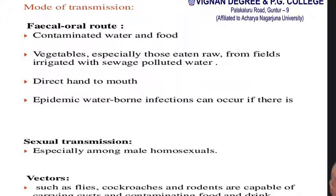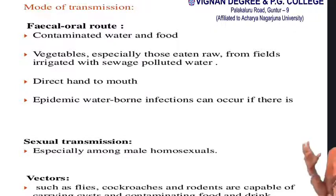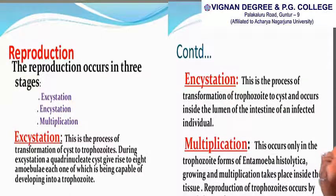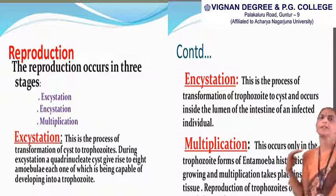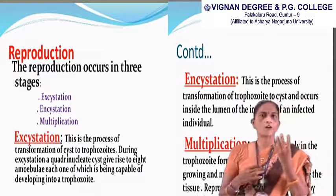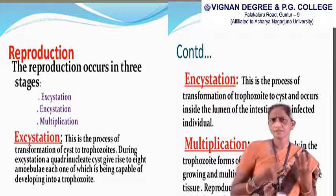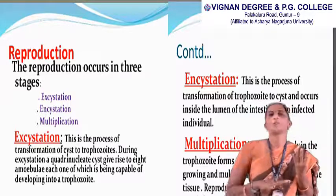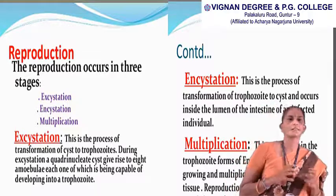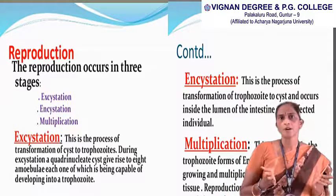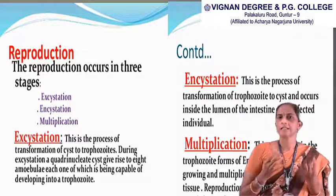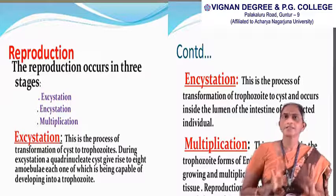Coming to the second stage — the pre-cystic stage. In this stage, the cell is in the form of a cyst. A cyst consists of a hard outer cell wall around the cell and contains four nuclei, which is called a quadrinucleate cyst. The cystic stage is very resistant — it cannot be destroyed by heat, boiling, or sterilization. It is highly resistant and consists of four nuclei.